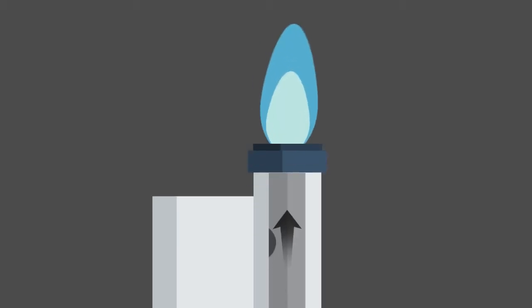Most natural gas appliances have a safety valve. If the pilot light goes out, the safety valve will shut off the gas, preventing it from entering the home.